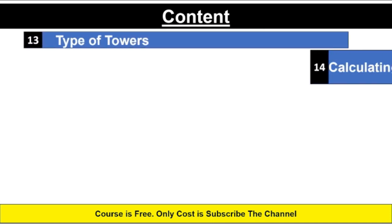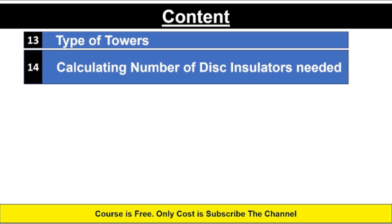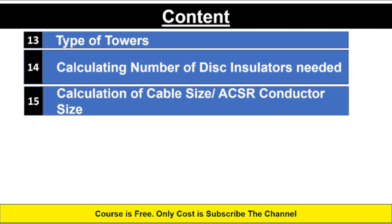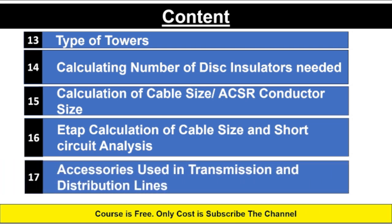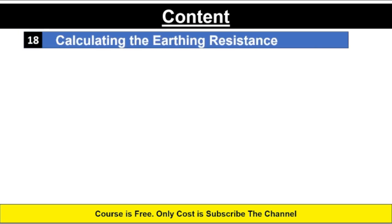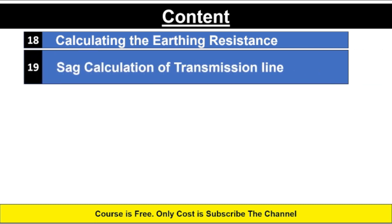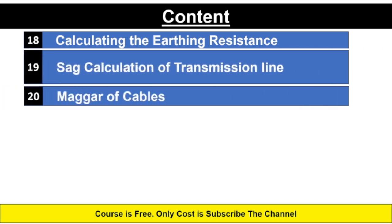Additional topics include types of towers, calculating the number of disc insulators needed, calculation of cable size or ACSR conductor size, cable sizing and short circuit analysis, accessories used in transmission and distribution lines, calculating earth resistance, sag calculation of transmission lines, and OPGW cables. All these topics will be covered in this course.